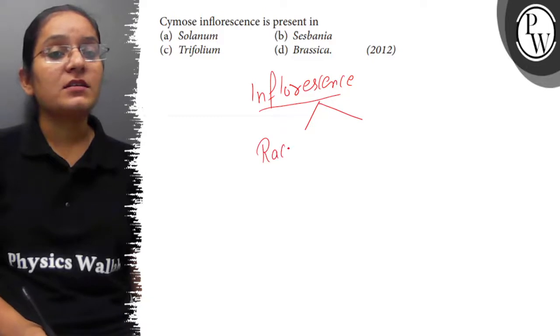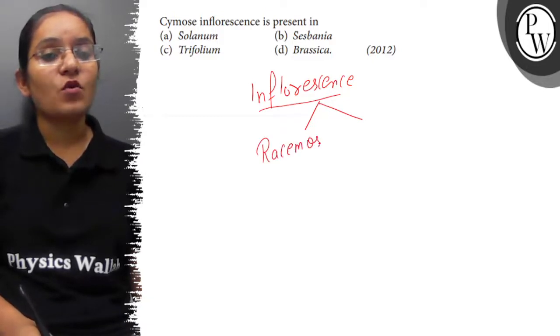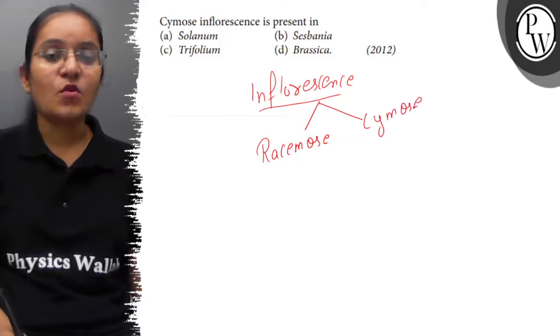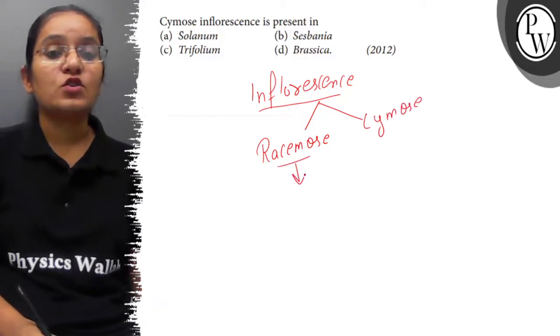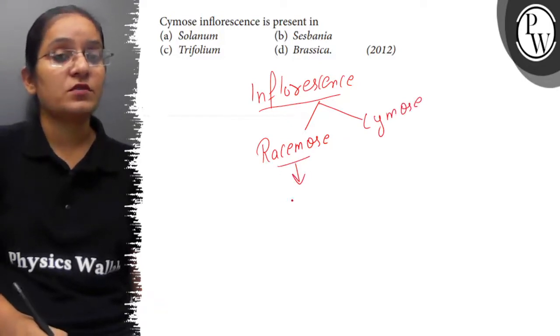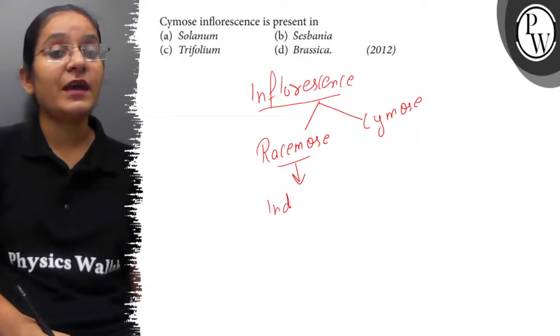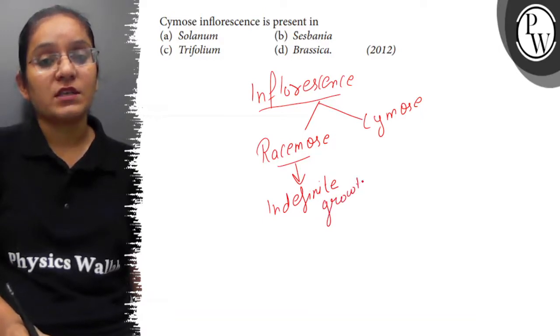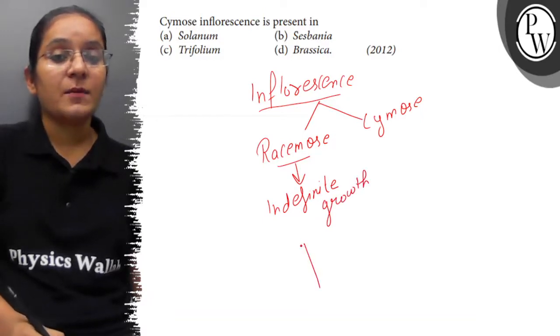Now, inflorescence is broadly categorized as racemose and cymose. Racemose type of inflorescence shows indefinite growth of plant. That's why it's also known as indefinite inflorescence. Because here, the main axis never terminates into flowers.